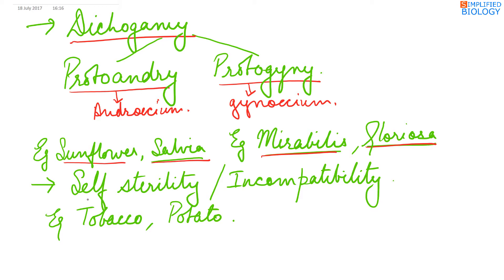Next condition is self-sterility or incompatibility. When the pollens fall on the stigma of the same plant or the same flower, they become sterile or they do not germinate. In that case, self-pollination cannot occur and cross-pollination takes place. Example: tobacco and potato.